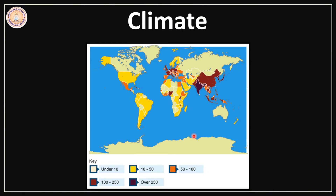As far as climate is concerned, we find that extremely cold regions or extremely hot regions have very thin population. The regions that do not receive much rainfall, like deserts, are thinly populated, while regions with moderate rainfall and moderate temperature are heavily populated.